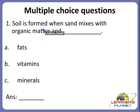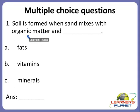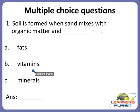The first one is: soil is formed when sand mixes with organic matter and dash. The same question we did, but it is twisted in another form. Is it A. fats, or B. vitamins, or C. minerals? Yes, very good — it is minerals. C is the correct answer.